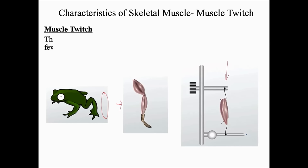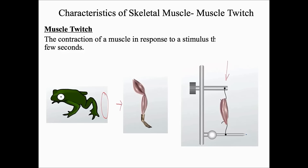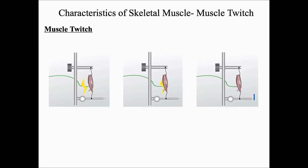A muscle twitch is a contraction of a muscle in response to a stimulus that lasts only a few seconds — it's pretty quick, instantaneous. Here we see an electrical impulse traveling down a force transducer, and what is ultimately recorded is this muscle contraction called a twitch.